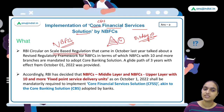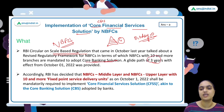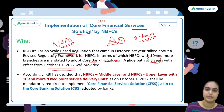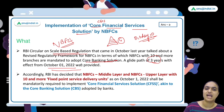When that circular came out in October, it was mentioned that NBFCs with 10 or more branches would adopt the core banking solution, and a three-year path was given starting 1st October 2022. It was also mentioned that RBI would come up with another circular in this regard.